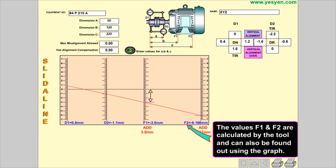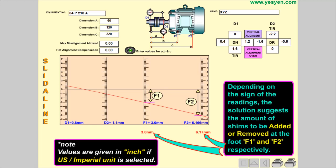The values F1 and F2 are calculated by the tool and can also be found out using the graph. Depending on the sign of the readings, the solution suggests the amount of shims to be added or removed at the foot F1 and F2 respectively.